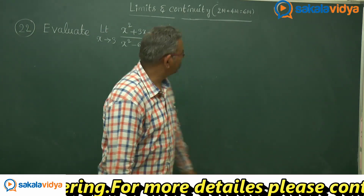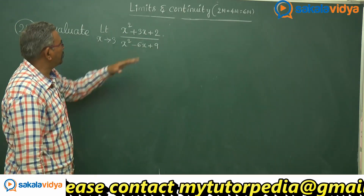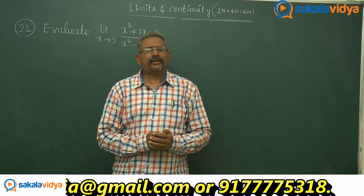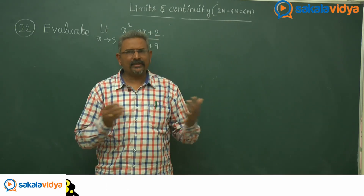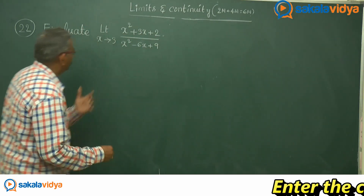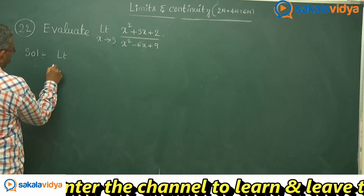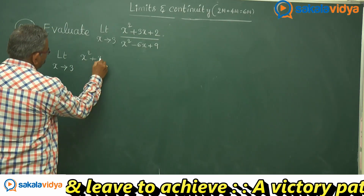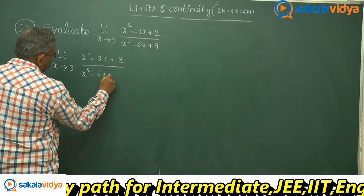Let us solve one more problem. Evaluate limit x tends to 3, x squared plus 3x plus 2, divided by x squared minus 6x plus 9. Let us try by substituting the limit directly, and verify whether we get a finite value, 0, or infinity.